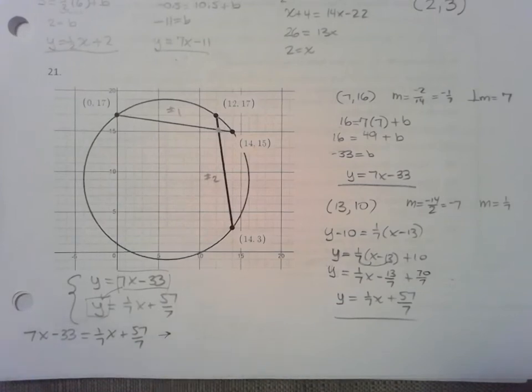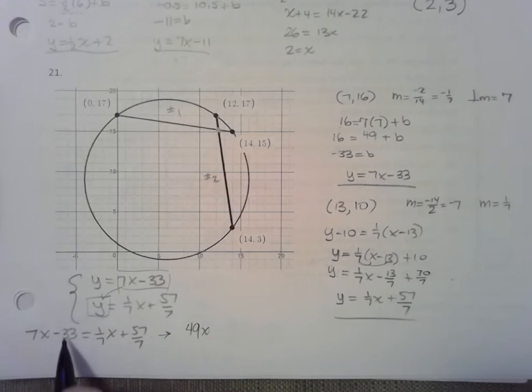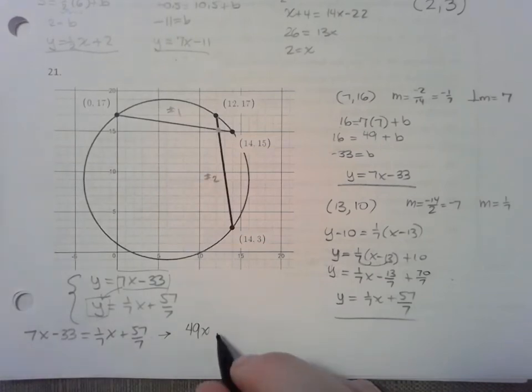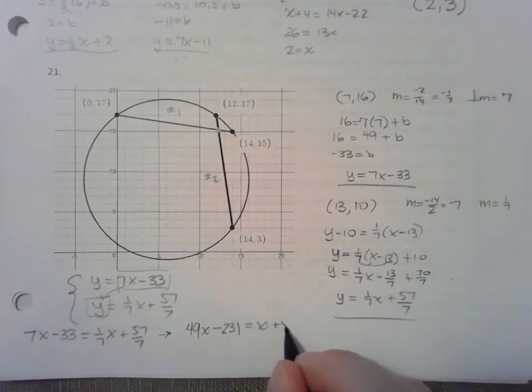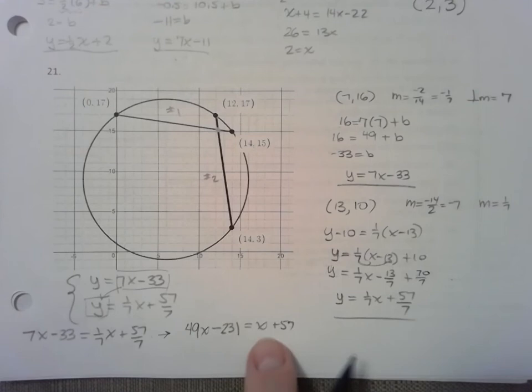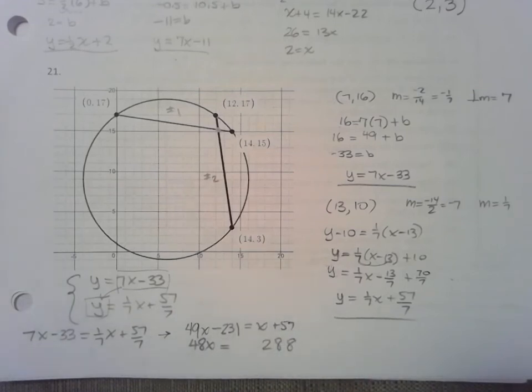So this equation is now going to become 49x. 210 and 21 is 232 minus 230, actually I think I said 232, I meant to say 231. Minus 231 equals x plus 57. I'm going to move the x to the left and 231 to the right. Okay, 48x equals, let's add 231, 8, 8, 2, 288.